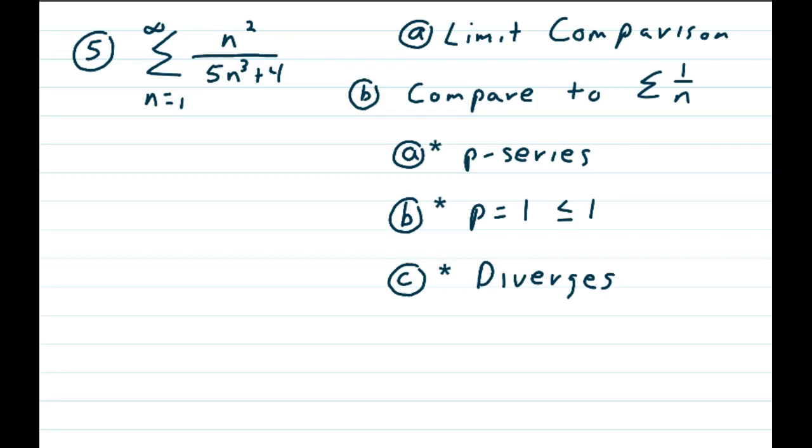So we're going to start with the positive series, which is what I always do first. Part A, we're going to do a limit comparison test on the positive series. Part B, we're going to compare to the summation of 1 over n, which is a p-series.